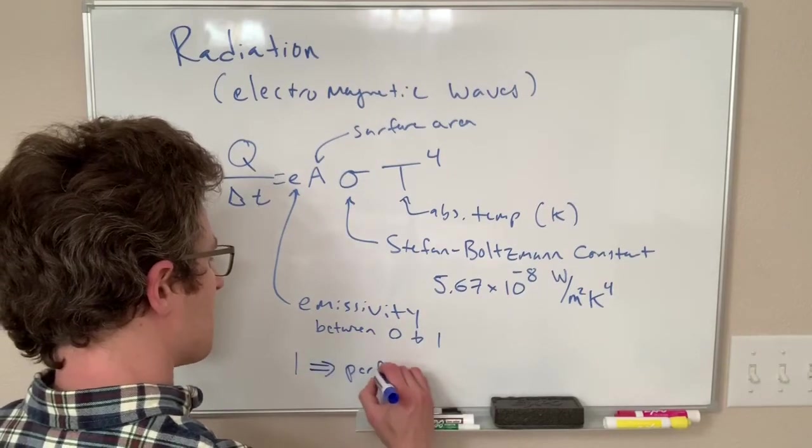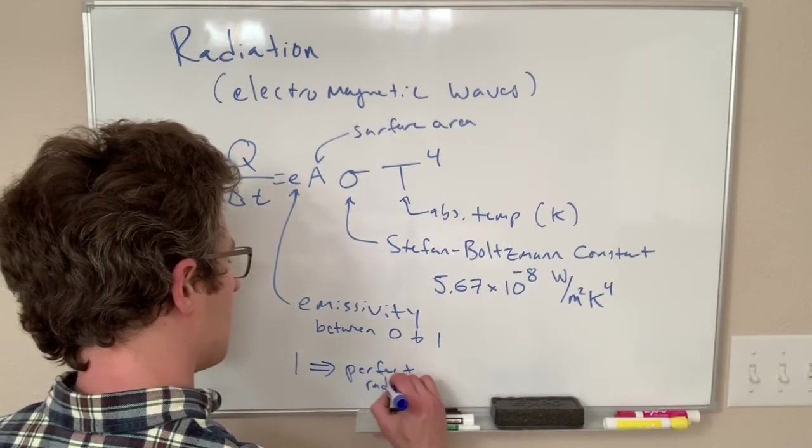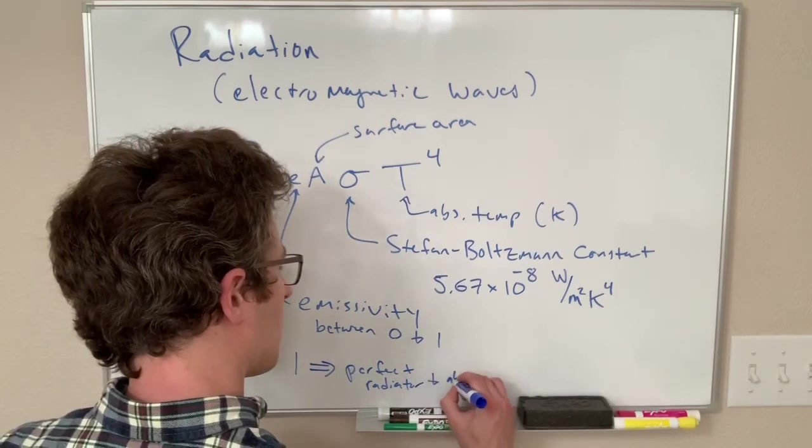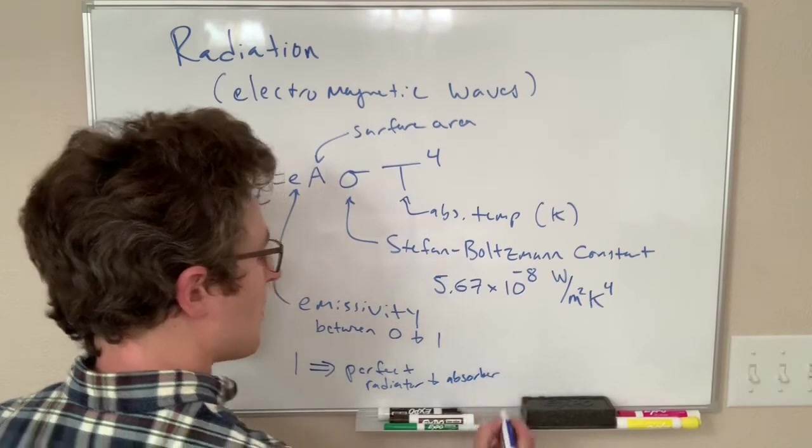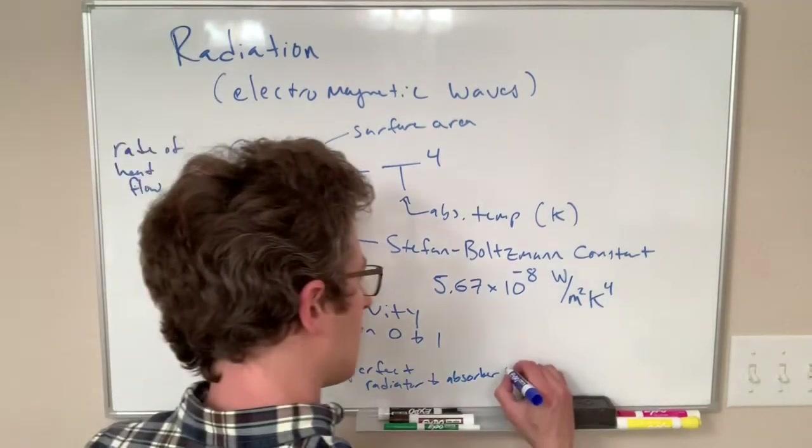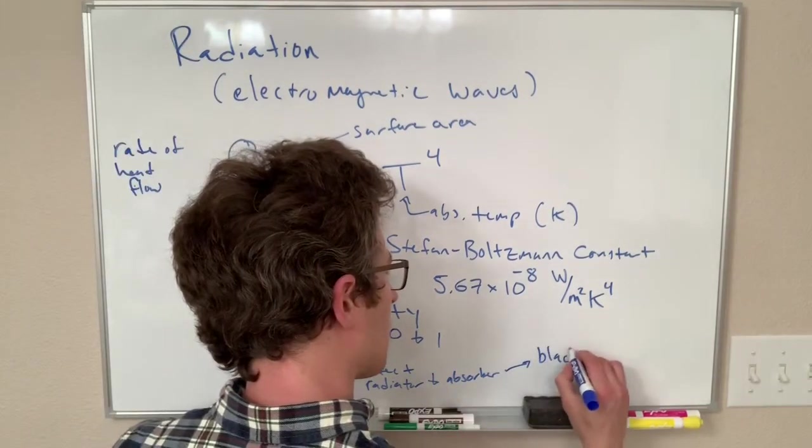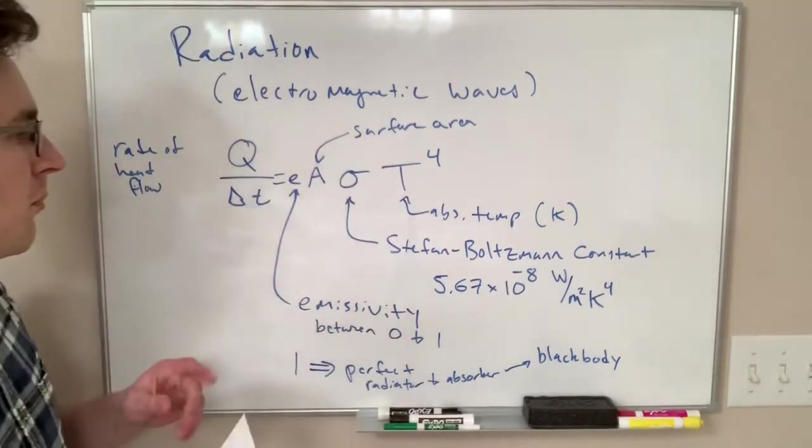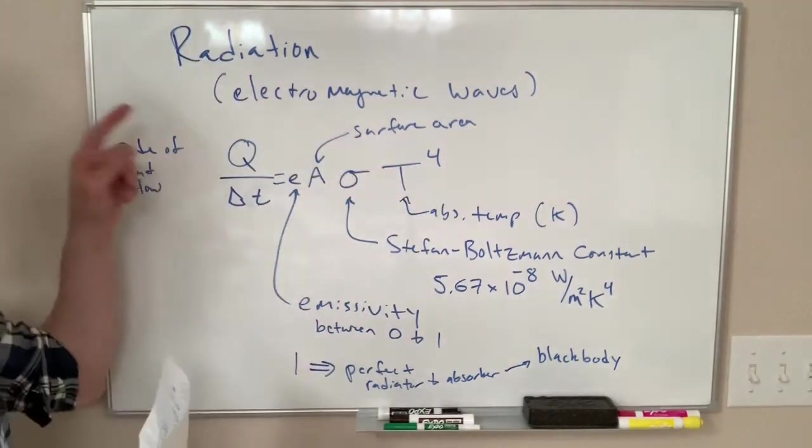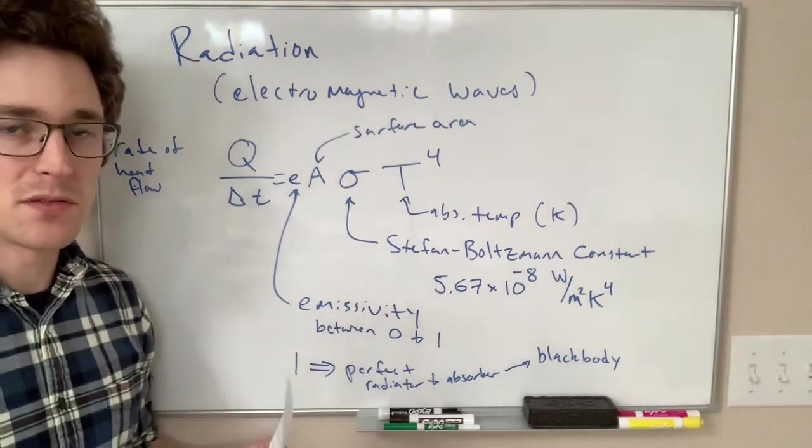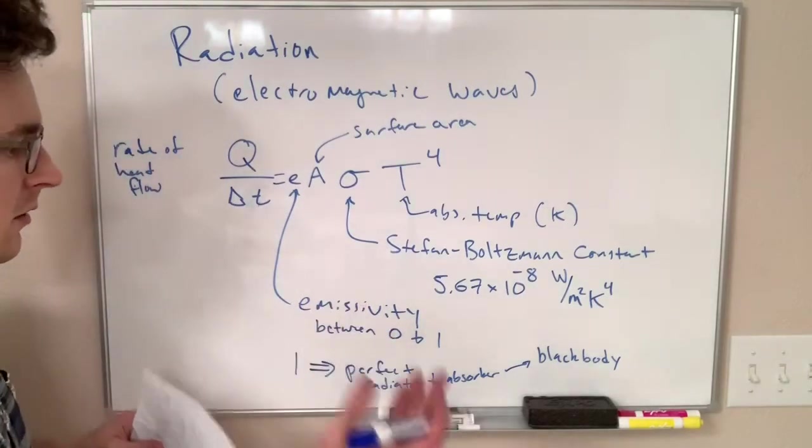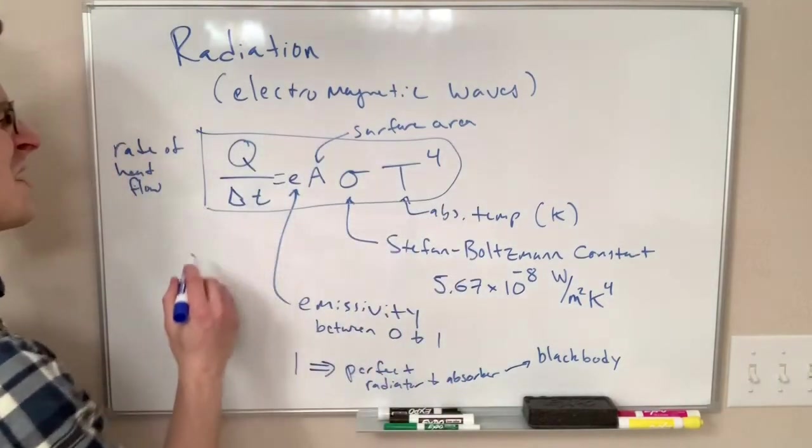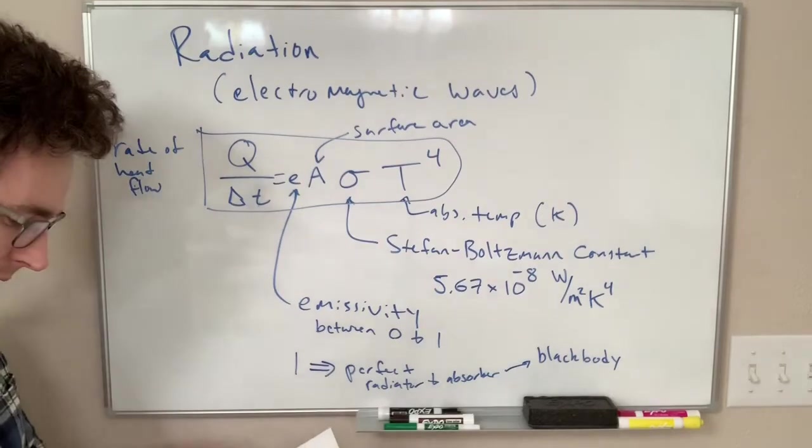Implies this perfect radiator and absorber. That is called a black body. And this equation is sometimes known as black body radiation because this is the kind of radiation emitted by these ideal black body emitters. All right, that's a messy box but we got it.